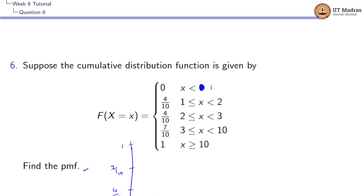At x = 1 you will be having the value 4/10. There is a jump there, and until x = 2 we will be having 4/10. From 2 to 3 also you will have the value of 4/10, and at x = 3 you will be having a cumulative probability of 7/10. Until x = 10 the value would be 7/10, and once it is equal to 10 or greater it is equal to 1. This is the cumulative distribution function plot.